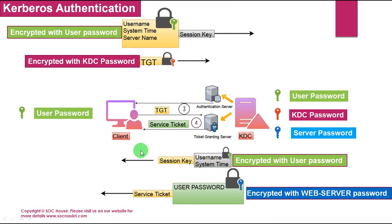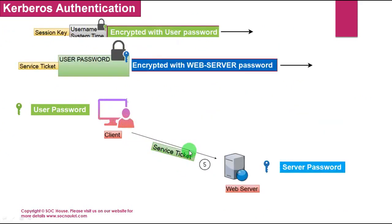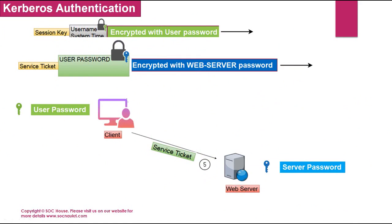The user forwards both tickets to the main web server. The server decrypts the service ticket with its password and finds the user password. It then uses the user password to decrypt the session key and finds the username and system time of the user machine. If the system time matches the system time of the user machine, the server allows the user to access the resources.